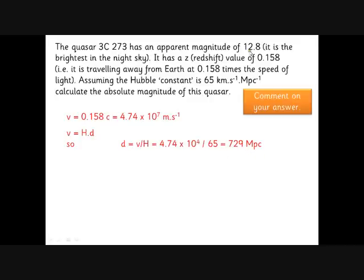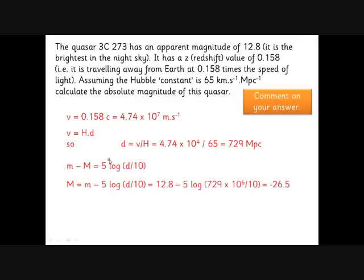Now we've got an apparent magnitude and we've got a distance. That's enough to give us the absolute magnitude. So we need our m minus M equals 5 log d over 10 equation. Rearrange that, we get big M, the absolute magnitude, is little m, the apparent magnitude, minus 5 log d over 10. Here's our d. So you just plug those numbers into the calculator. Remember this distance has to be in parsecs. So we've got to turn our megaparsecs into parsecs. And you plug the numbers in, you get minus 26.5.